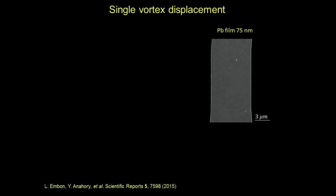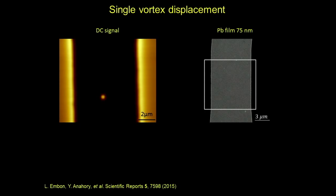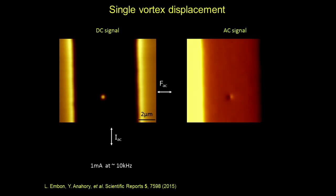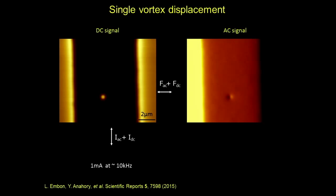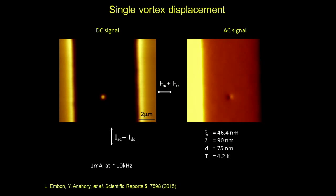To conduct a more systematic study, we moved to a simpler sample: a straight bridge with no constriction. We managed to field-cool a single vortex into the entire sample, which is several microns squared. We apply an AC current which generates the dark-and-white spot giving the restoring force at that specific point. We also apply a DC force to move the vortex around to address the restoring force at other positions. To further simplify the analysis, we used a thin film between xi and lambda, allowing us to treat the vortex as a point particle rather than an elastic string. These experiments were done at 4.2 kelvin.